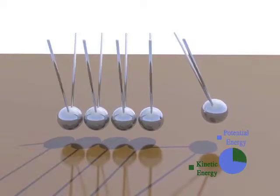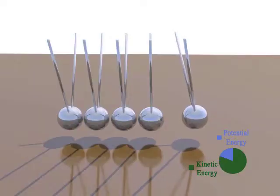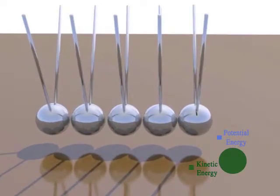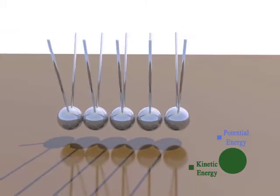As you release it, the ball falls and all the potential energy is gradually converted to kinetic energy. When it hits the next one, all the energy gets transferred to it. That one then passes it on to the next one and so forth like a shockwave.